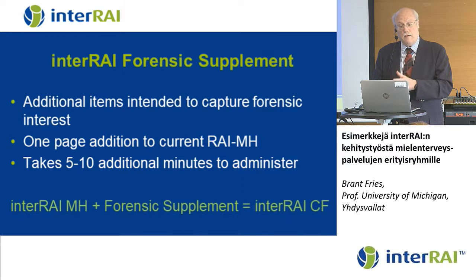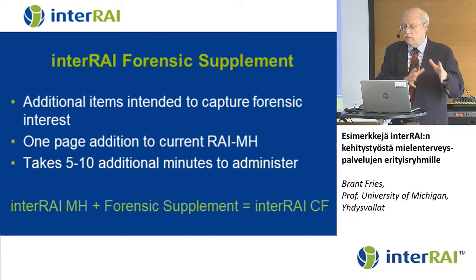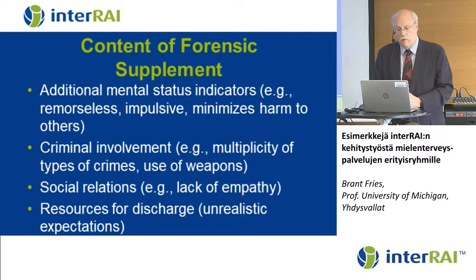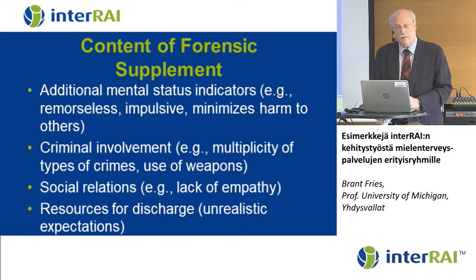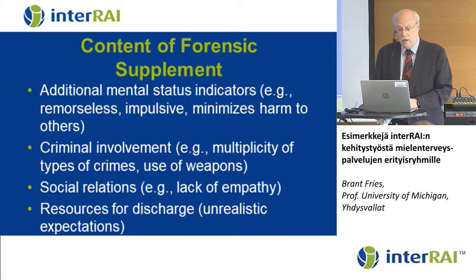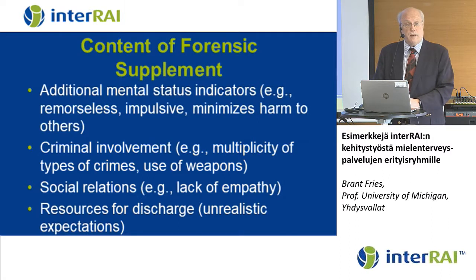If you have a forensic environment, you can do the mental health instrument and then complete this one-page supplement to bring in forensic information. Taking the two instruments together — the mental health instrument and the forensic supplement — we combined them to develop a correctional facility instrument, the CF. The additional content included male status indicators like remorselessness, impulsiveness, and minimizing harm to others; criminal involvement including multiplicity of types of crimes; use of weapons in a crime; social relationships; lack of empathy; and resources for discharge, such as unreasonable expectations of discharge.